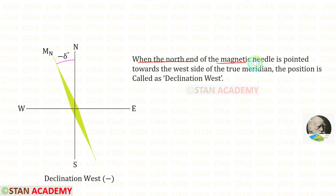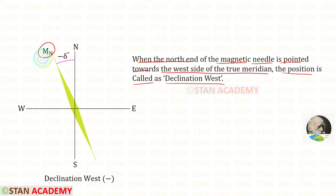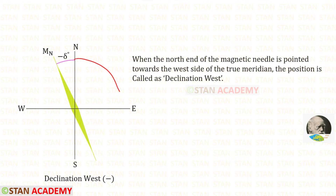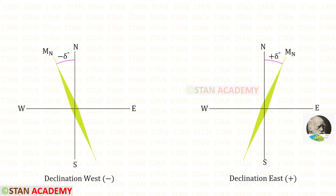When the north end of the magnetic needle is pointed towards the west side of the true meridian, the position is called declination west. You can see that the magnetic needle is pointed towards the west. In this case, if we wanted to find the true bearings which start from the true north, we have to subtract the declination. So we have to take the declination west as negative, because to find the true bearing we have to subtract the declination from the magnetic bearings.